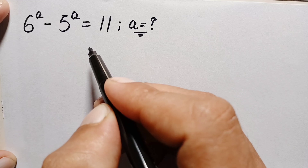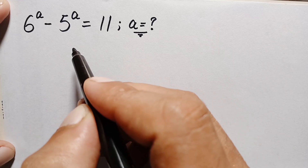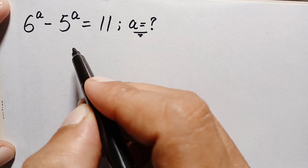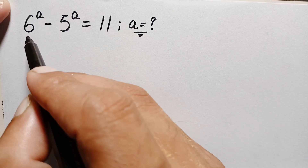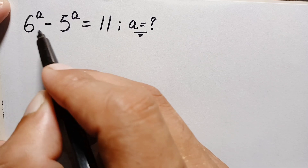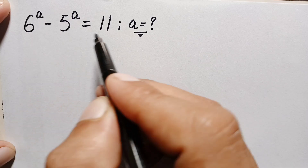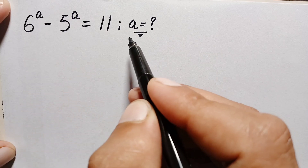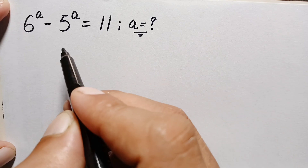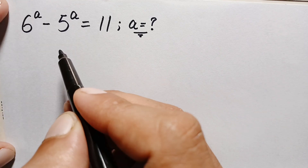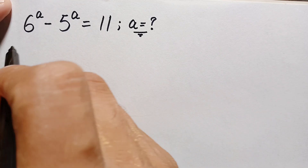Hello everyone, you are welcome. Today we have a new exponential math problem: 6 raised to power a minus 5 raised to power a is equal to 11. We will try to find out the value of a. Let's start our solution.